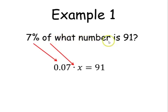Then we have what number? Well, we don't know what number. And when we don't know what number in math, we use a variable and that variable is x. So in this case, the what number is the x.